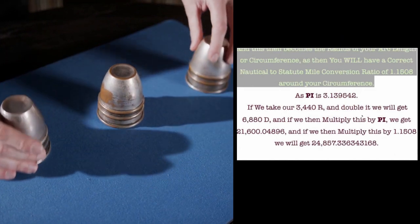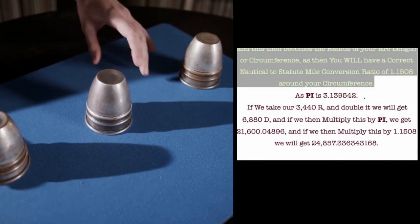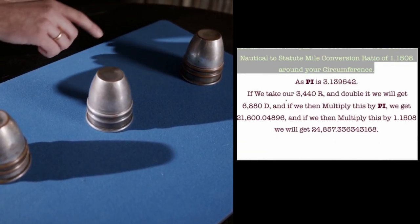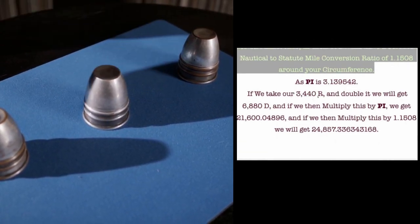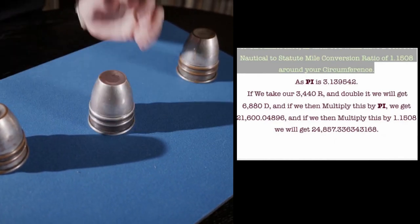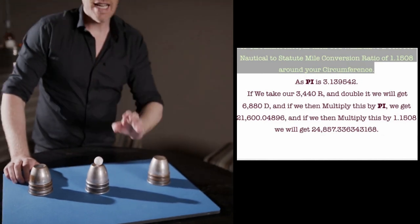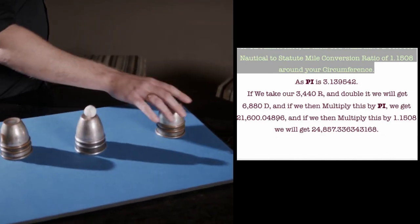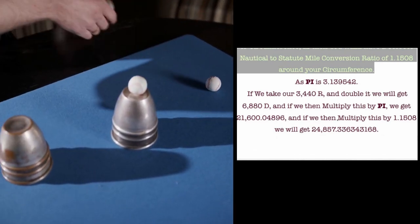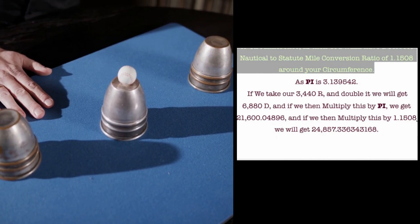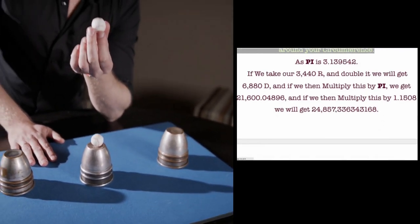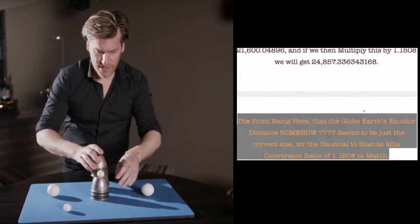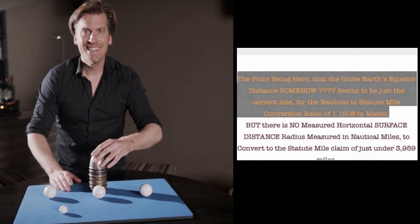As pi is 3.139542, pi is a bit of a funny number. There's actually 18 numbers in sum that reference to pi. If we take our 3440r which is our radius and double it, we will get 6880d in diameter. And if we then multiply this by pi, we get 21600.04896. And if we then multiply this by 1.1508, we will get 24857.336343168. Just putting in all the numbers for people who want them.